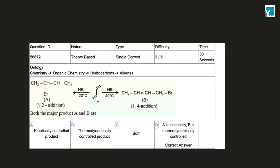The question is: we have this reactant and if I add hydrogen at 40 degrees Celsius, it will be the 1,4 addition product. But if I add it at low temperature, it will be the 1,2 addition product. And the product that we have at low temperature will be the kinetically controlled product.